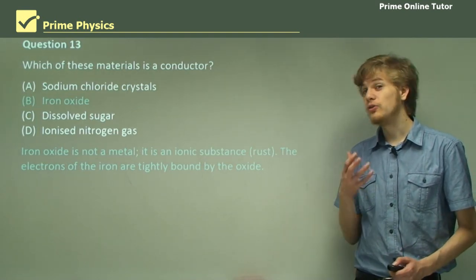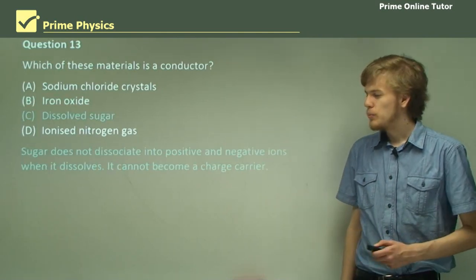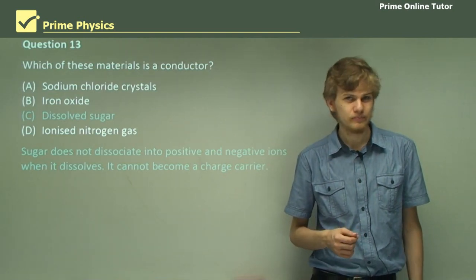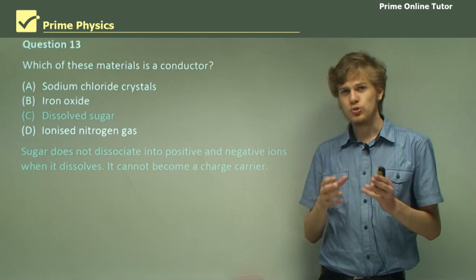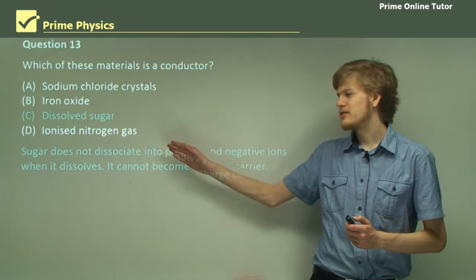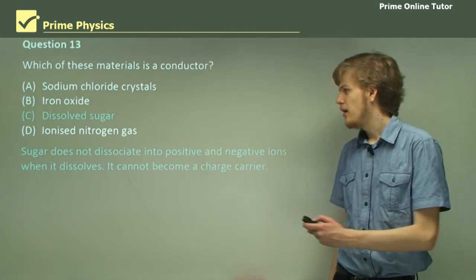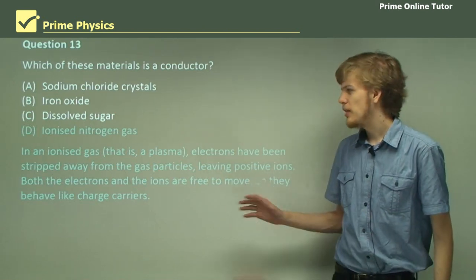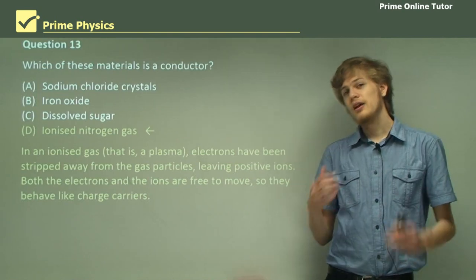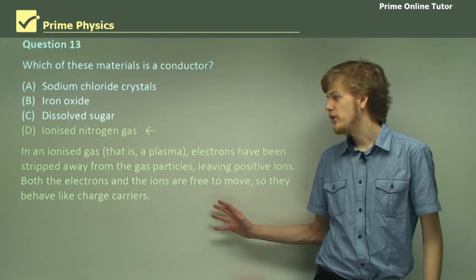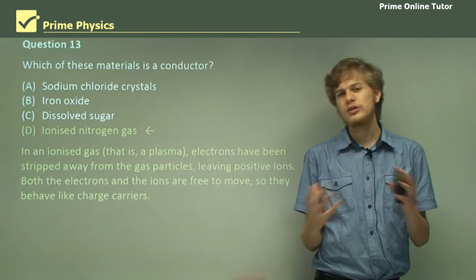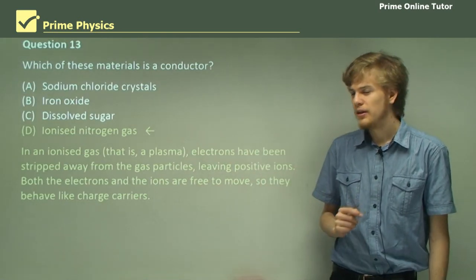Dissolved sugar also looks a little promising — we know that dissolved salt conducts electricity. But the thing about dissolved sugar is that it doesn't separate into positive and negative ions, because sugar is not the same thing as salt. So even though it's dissolved, it stays neutral, which means that the water doesn't become any more conductive. The last option is ionized nitrogen gas. If we ionize it, we can call it plasma. So D is the correct answer. In nitrogen plasma, the electrons of the nitrogen molecules are stripped away by the intense heat or the intense electric field, giving us positively charged nitrogen ions and negatively charged electrons — both of which are free to move — and this means that the nitrogen plasma can conduct electricity.